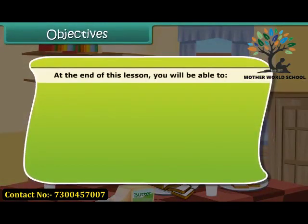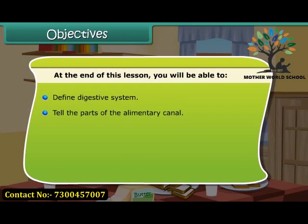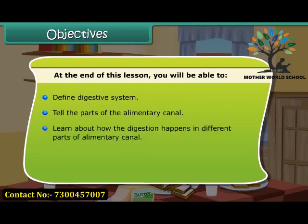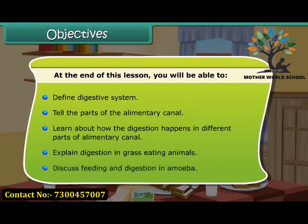At the end of this lesson you will be able to: define the digestive system, tell the parts of the alimentary canal, learn about how digestion happens in different parts of the alimentary canal, explain digestion in grass-eating animals, and discuss feeding and digestion in amoeba.